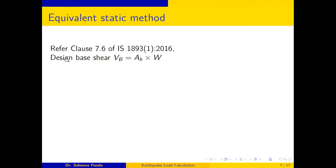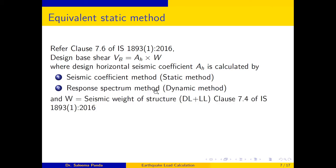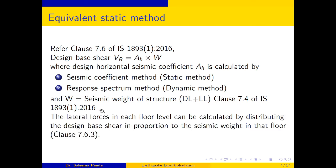For the Equivalent Static Method, referring to clause 7.6, the design base shear is given by Vb = Ah × W, where Ah is the design horizontal seismic coefficient and W is the seismic weight of the structure, which is dead load plus live load (refer clause 7.4 of IS 1893). The lateral forces at each floor level are calculated by distributing Vb in proportion to the seismic weight at each floor, as per clause 7.6.3.